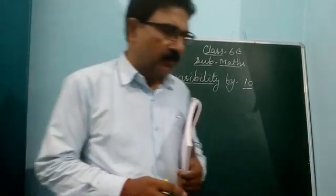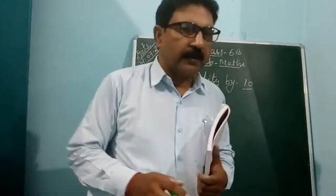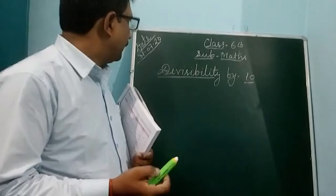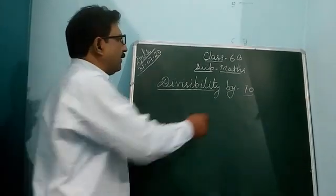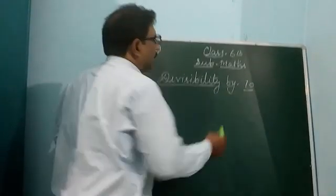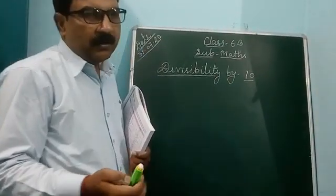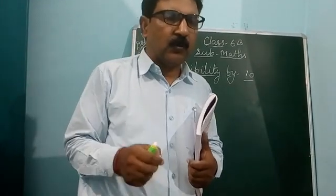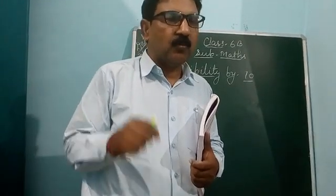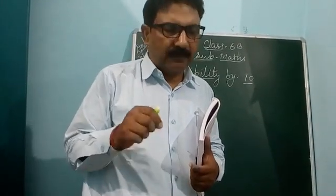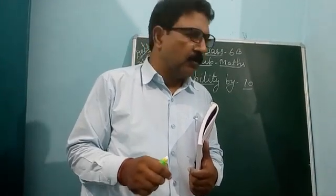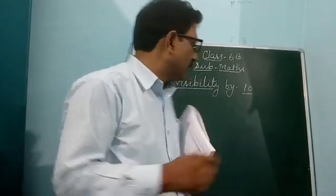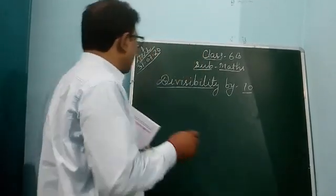Good morning, it's time. Today I am going to start with divisibility by 10. It is very easy. If the last digit is 0, meaning the ones place has 0, then that number is divisible by 10.